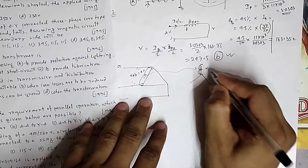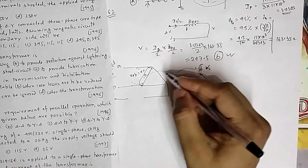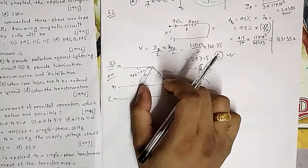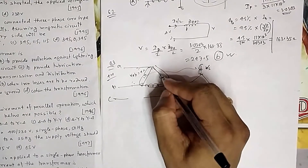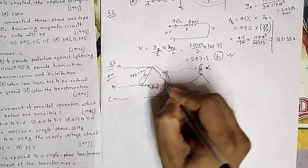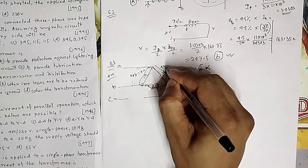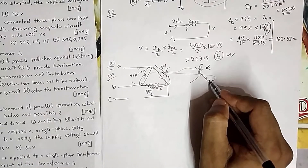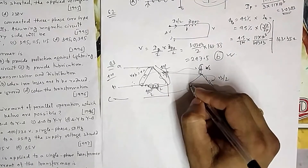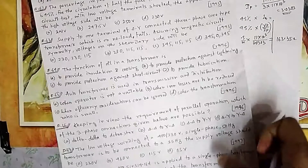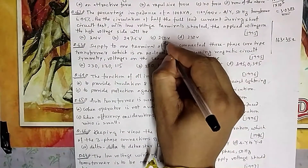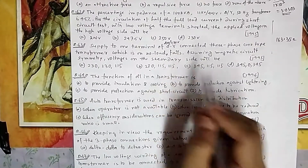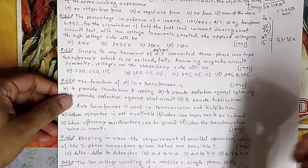The corresponding secondary winding gets its full rated voltage V_s. The other two delta windings — which were supposed to get V_AC and V_BC (each 400 V) — are now connected in series across V_AB, so each gets V_AB/2 = 200 V, which is half their rated voltage. Their corresponding secondary windings therefore induce V_s/2 each. So the three secondary voltages are V_s, V_s/2, and V_s/2. For a 400/230 V transformer this gives 230 V, 115 V, and 115 V — option B.